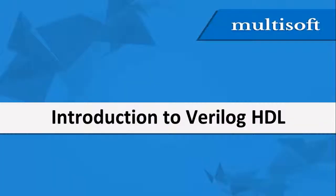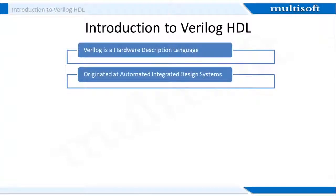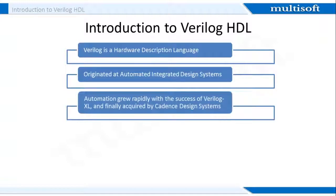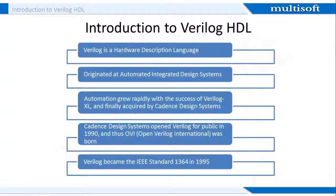Now that we've built up our basics of VLSI, it's time to introduce Verilog HDL. Verilog HDL is a hardware description language used to design and document electronic systems. It originated at the Automated Integrated Design Systems, which was later renamed as Gateway Design Automation. It grew rapidly with the success of Verilog and was finally acquired by Cadence Design Systems. Cadence then decided to open the Verilog language to the public in 1990, and thus OVI, i.e., Open Verilog International, was born. An IEEE working group was established in 1993 under the Design Automation Subcommittee to produce the IEEE Verilog standard 1364. Verilog became the IEEE standard 1364 in 1995.